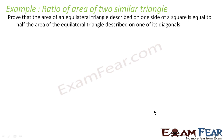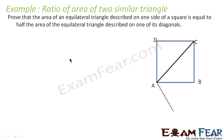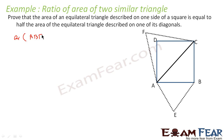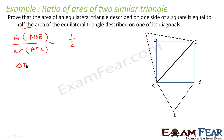We'll take one more example. We have to prove that the area of an equilateral triangle described on one side of a square is equal to half the area of an equilateral triangle described on the diagonal. Let's draw this: this is my square ABCD, this is my diagonal AC. On side AB, let's create equilateral triangle ABE. And on the diagonal, let's create equilateral triangle AFC. We have to prove that area of triangle ABE by area of triangle AFC equals one half.